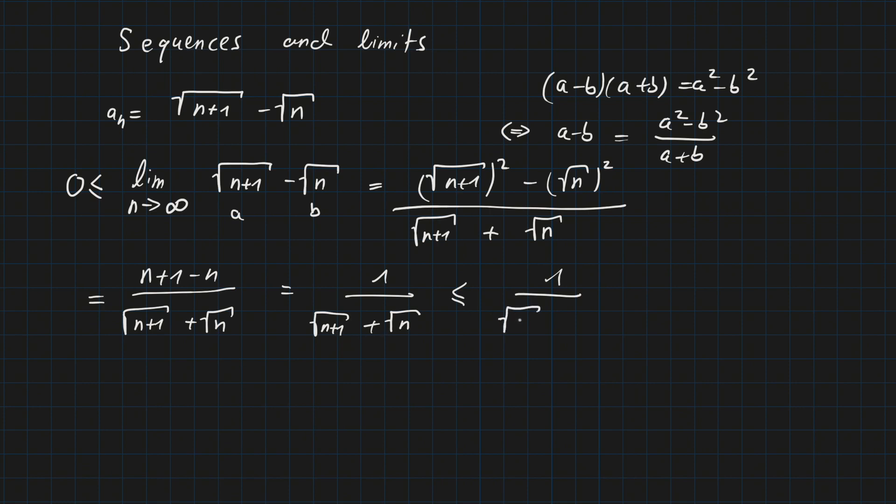...and then just have square root of n plus square root of n, and this equals 1 divided by 2 times square root of n. And if n tends to infinity, this whole term becomes 0.